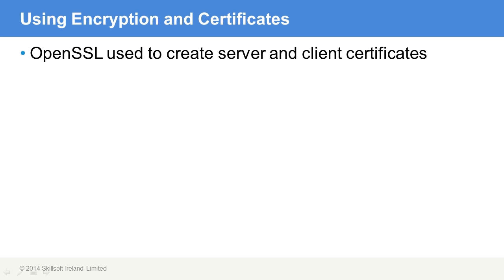What you're doing is saying that this server in our environment can be trusted, and then you install the certificates on the clients that are accessing the server, and then the server trusts those clients. It's just validating the identity of the systems that you feel are trustworthy. Any other systems that might show up in your environment, such as a visiting client, would not have a certificate, so the server will not trust the communications of that particular system.